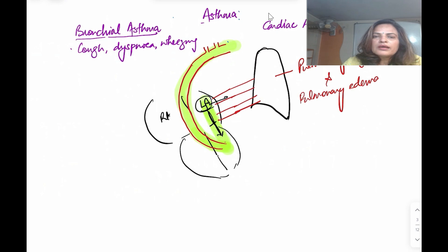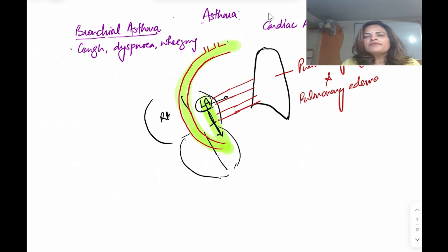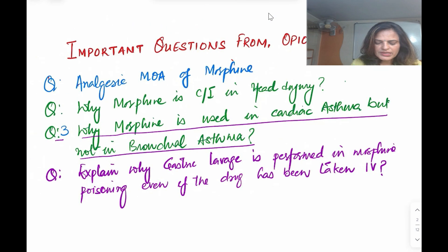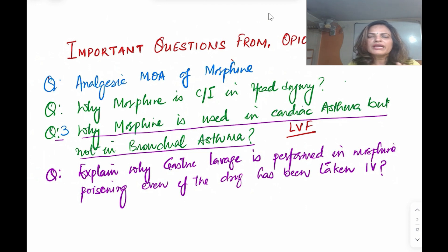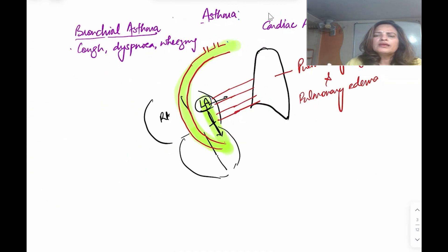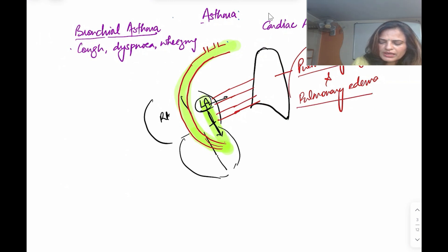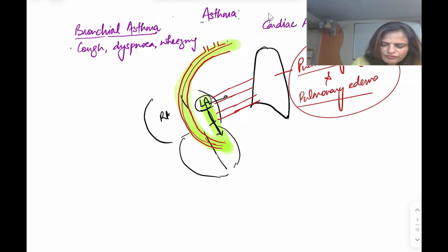In cardiac asthma and bronchial asthma, you should be able to distinguish both, because the management is totally different. Cardiac asthma is a complication of left ventricular failure. So the question is: why is morphine used in cardiac asthma, or equivalently, why is it used in left ventricular failure? The answer will be the same.